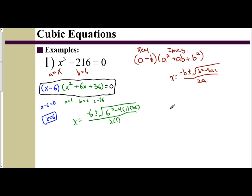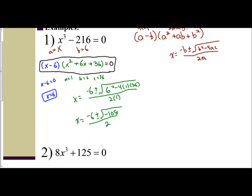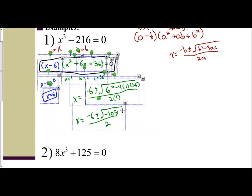So what we want to do is: 6 squared is 36, and 4 times 1 times 36 is 144. So I have negative 6 plus or minus the square root of negative 108 over 2. There's a negative inside the radical, which means you have an imaginary answer.